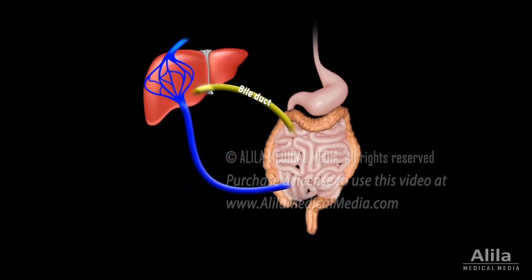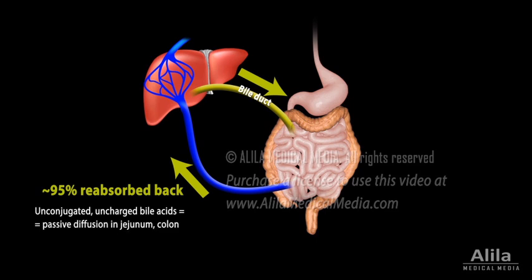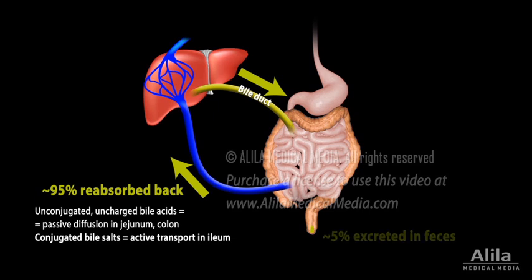About 95% of the bile acids delivered to the duodenum are reabsorbed back into blood. Some unconjugated and uncharged bile acids are passively absorbed along the intestine, but most of the conjugated bile salts are actively transported through the cells of the ileum, the last segment of the small intestine. The small amount that is excreted in feces is compensated for by newly synthesized bile acids in the liver.